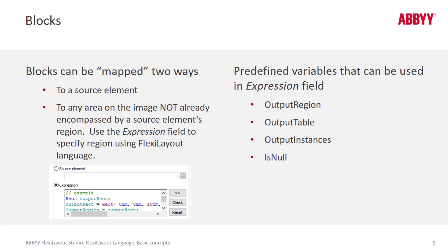We know that blocks are future FlexiCapture fields. They're the fields that get verified if needed and get exported as needed. They need to be associated or mapped with perhaps a source element — maybe a labeled field, a character string field, or a text element field. Or if none of those elements can describe the area, you can describe the area using not the source element, but rather an expression.